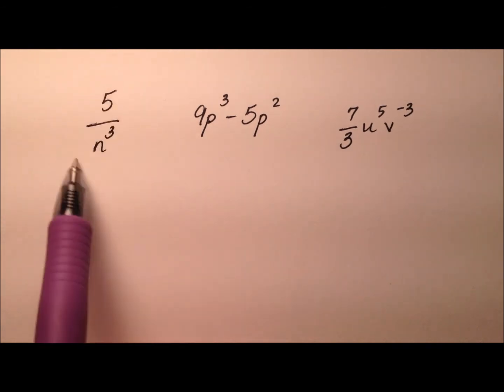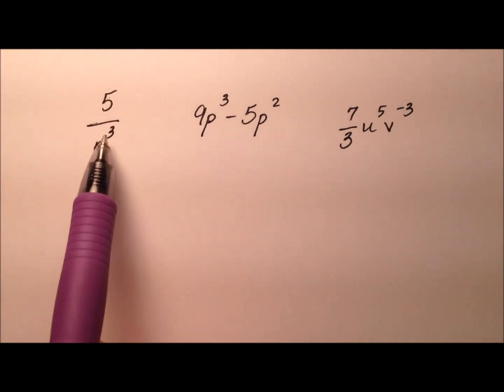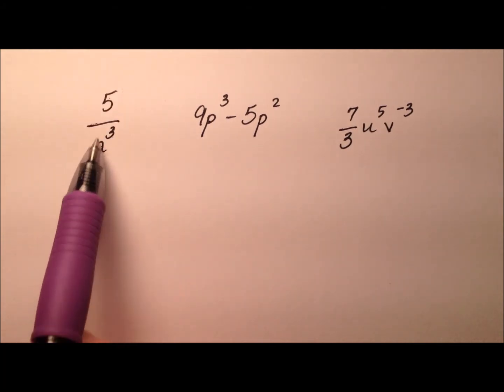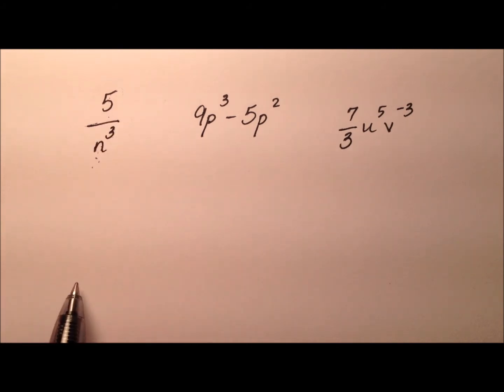So in this first one, we have 5 and we have n cubed. Well, 5 is a number. n cubed is a variable with a whole number exponent, but this is not the product of 5 and n cubed. This is the quotient of 5 and n cubed. So we're not multiplying these together. We are dividing. So this one's not a monomial.